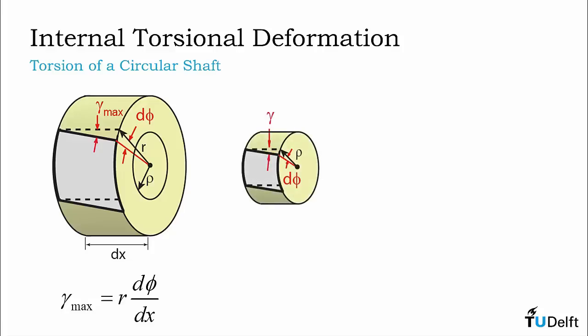Extracting the interior portion of our segment at radius rho, we see that the surface of this extracted segment also undergoes shear deformation. Using the same approach as before, it is easy to see that the shear strain gamma at this new radius rho will have a similar relation to d phi and dx. This expression can be rearranged in terms of the outer surface shear strain gamma max, resulting in the expression rho over R times gamma max.